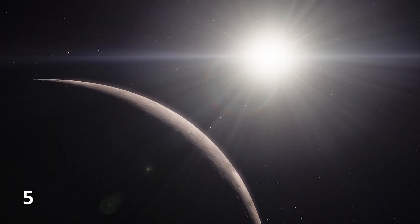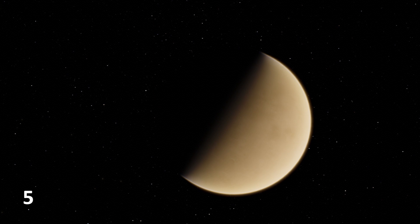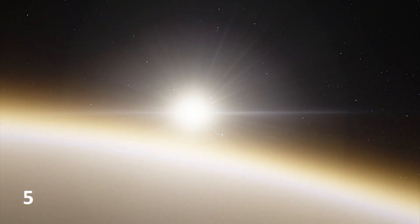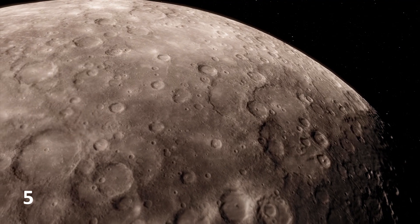Even though Mercury is the closest planet to the Sun, it is not the hottest one. Venus, the second planet, is the hottest in the solar system because of its thick atmosphere that traps the Sun's heat. Mercury, on the other hand, doesn't have an atmosphere.